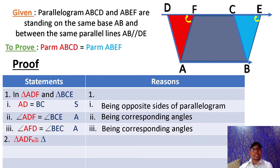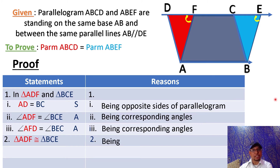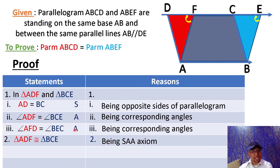Now in statement four, these two triangles — the red triangle ADF and the blue triangle BCE — are congruent. The reason is the side-angle-angle axiom. You can also write angle-angle-side, but remember, when writing angle-angle-side, the first statement should be angle, the second statement should be angle, and the third statement should be side.